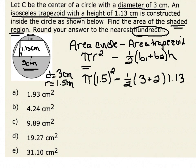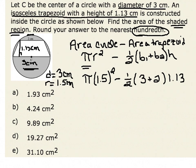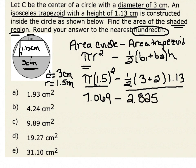We can now calculate the area of the circle and subtract the area of the trapezoid. The area of the circle is 1.5 squared times pi, which gives us approximately 7.069 centimeters squared. Taking away the area of the trapezoid, which is 2.825 centimeters squared, the area of the shaded region is 4.244 centimeters squared.